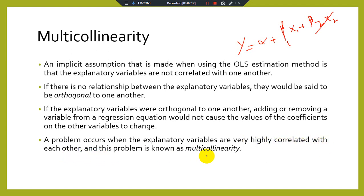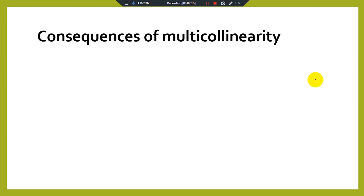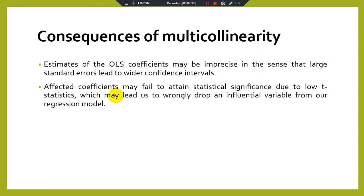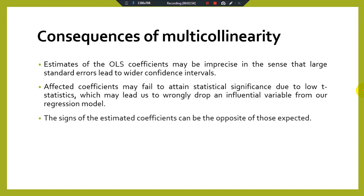A problem occurs when explanatory variables are very highly correlated with one another, and this problem is known as multicollinearity. When there is multicollinearity among the explanatory variables, the OLS coefficient estimates may be imprecise, in the sense that large standard errors lead to wider confidence intervals. Affected coefficients may fail to attain statistical significance due to low t-statistics, which may lead us to wrongly drop an important variable from our regression model.